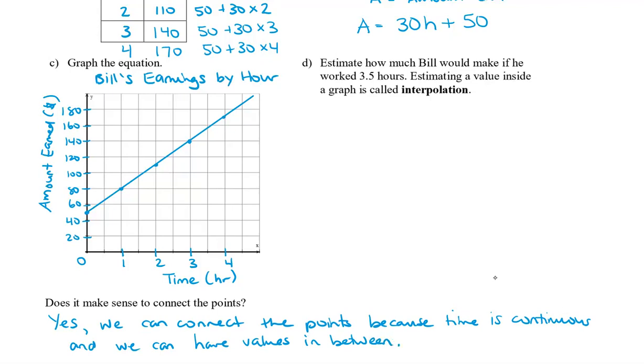And this leads us to our last question. So estimate how much Bill would make if he worked 3.5 hours. So when we estimate a value inside the graph, because we notice that 3.5 hours is here on our x-axis, we follow this value up to our graph, and it's approximately right there. So estimating a value inside the graph is called interpolation. So estimating where this value is here, we know that this is 150, and that seems to be in between 150 and 160, so we're going to estimate $155.